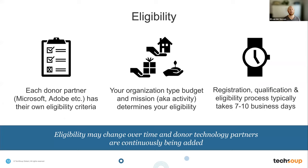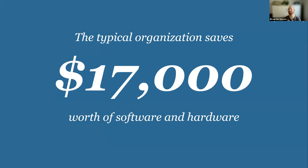Once you've done this, you put in information: what is your focus area, and how big is your budget? Each one of our donor partners has slightly different eligibility criteria, so you may not be eligible for everything in the catalog depending on the size or focus of your organization. You should start the process now because it usually takes about two weeks to get approved. But once you've done that, you can move into the TechSoup catalog and start making requests. When we average across the whole experience, organizations are typically saving about $17,000 in hardware and software.